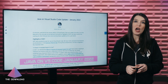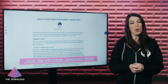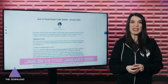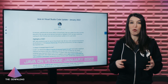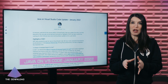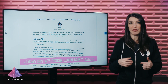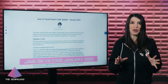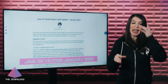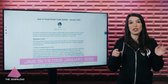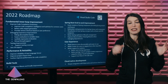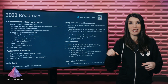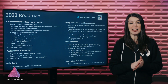Next up, the Java on VS Code January 2022 update is out now, and the team has also released their roadmap for 2022. If you are a Java developer and you haven't had a look at the Java extension pack for VS Code, you really should check it out. There's a lot of great work that team is doing, and you can even see that roadmap — I've got links in the show notes and description down below.